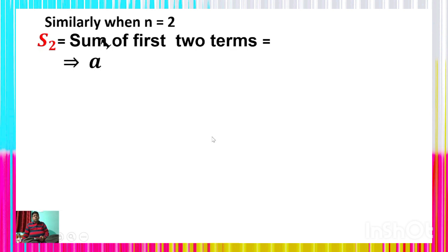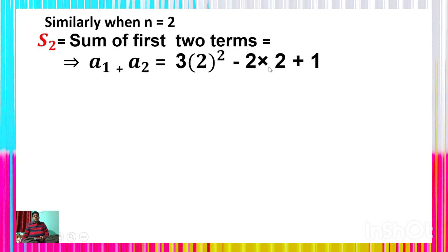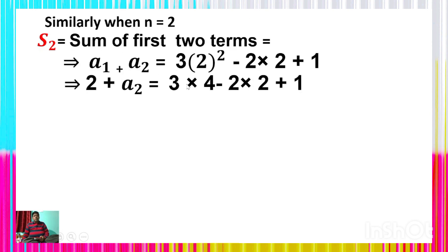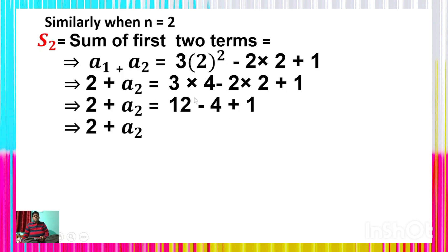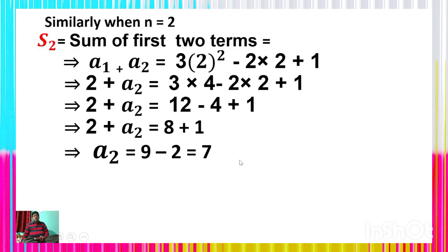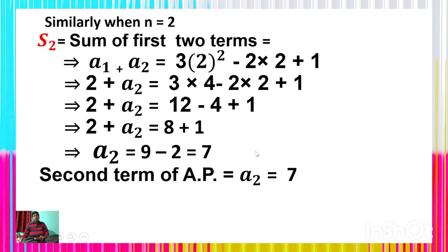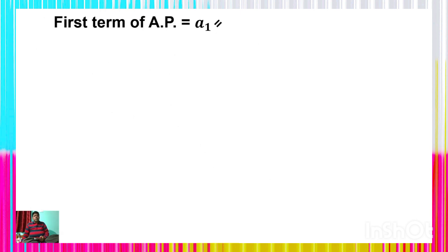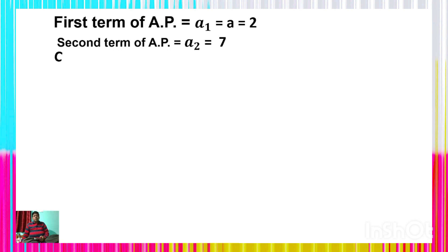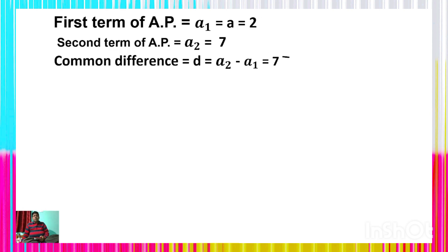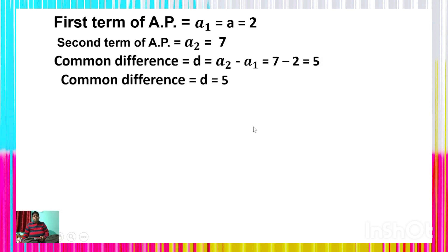When n = 2: S_2 = a_1 + a_2 = 3(4) − 2(2) + 1 = 12 − 4 + 1 = 9. So 2 + a_2 = 9, giving a_2 = 7. Thus the second term is 7. The common difference d = a_2 − a_1 = 7 − 2 = 5.